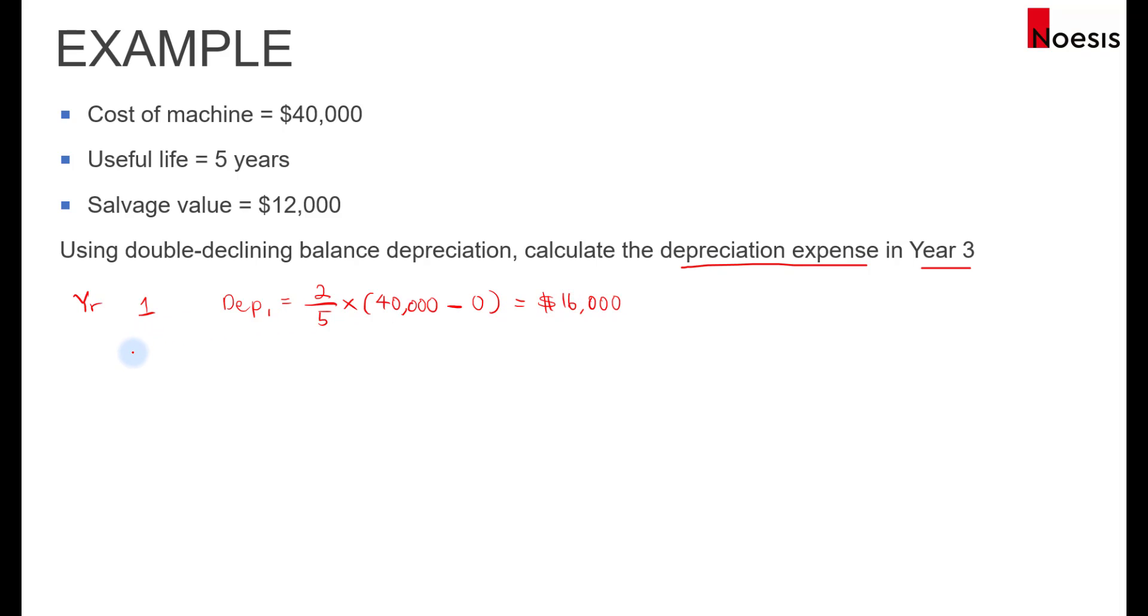For year 2, when you compute the depreciation expense, that will be 2 over 5, multiplied by 40,000. And then we have the depreciation from the previous year, so that's the accumulated depreciation. So we minus 16,000, so that is $24,000 book value, still above 12,000. Taking 24,000 multiplied by 2 over 5 gives us 9,600.